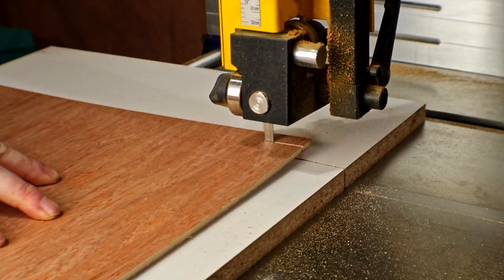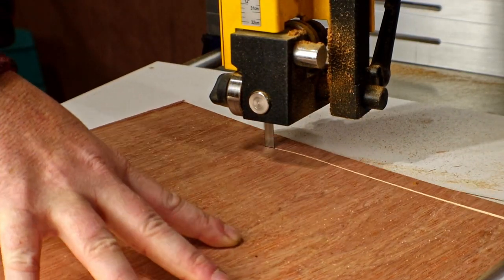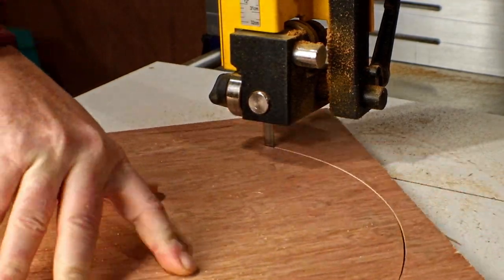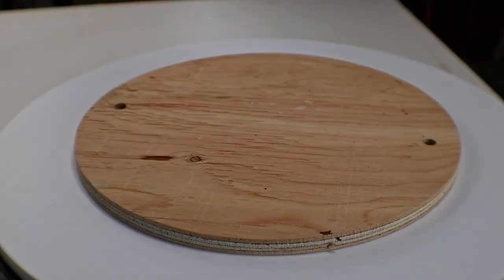This project finally gave me a chance to use my new circle jig for the bandsaw. I'll add a link on the screen for that if you want to see how that's made. But before I could do any of that I needed to make a template to make it easier to batch out several of the bats at once.